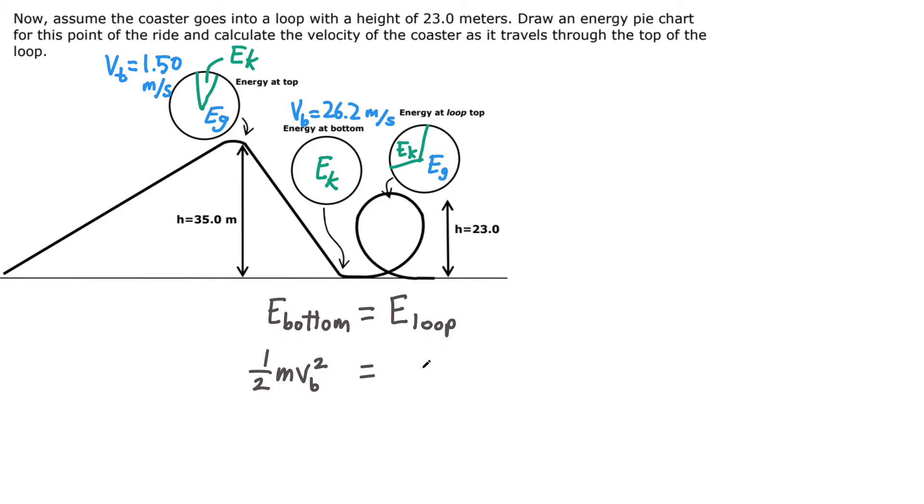At the top of the loop, there is a split of energy. There's some kinetic energy, one-half mv squared. This is going to be a different velocity, so let's call it v subscript l for loop, plus the gravitational potential energy that it gained when it went up into the loop. The formula for gravitational potential energy, of course, is mgh.